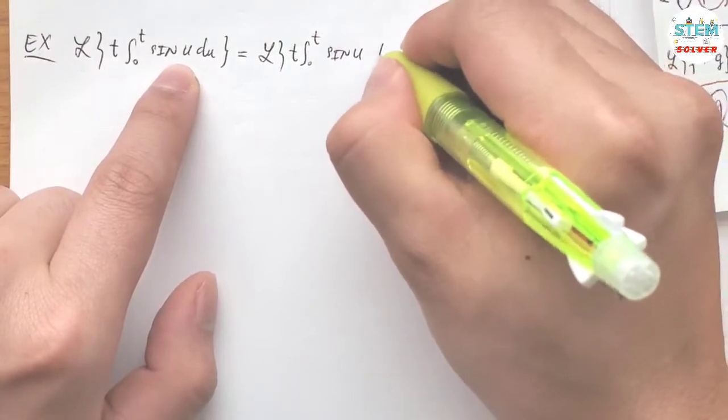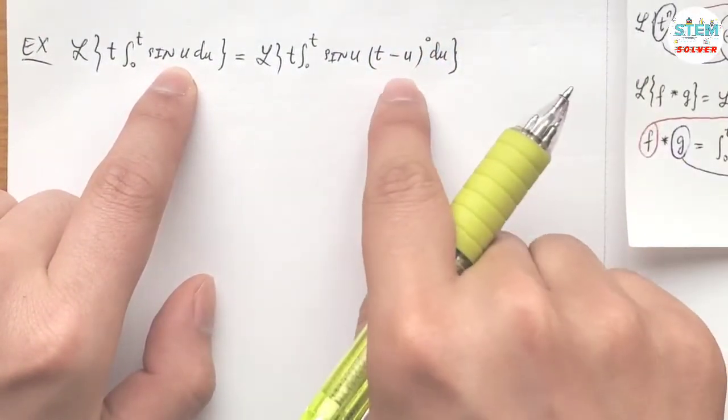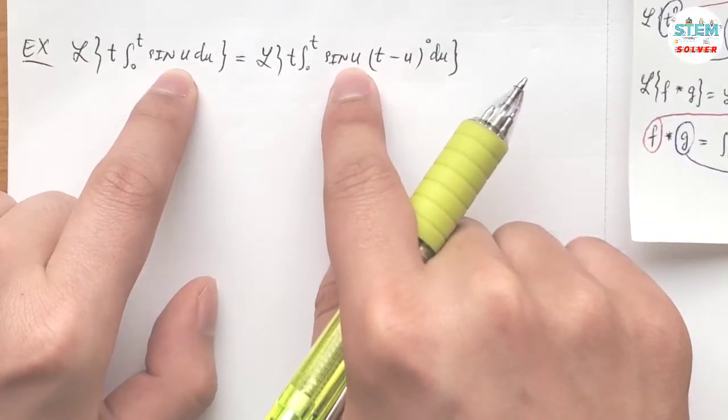Okay, so this is the function in terms of u, and here's the function in terms of t minus u. So t minus u to the 0 is just 1, and 1 times psi is just this, right?